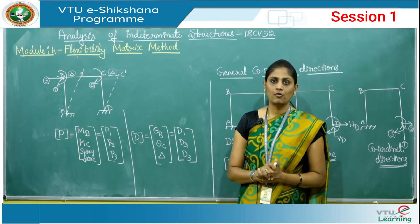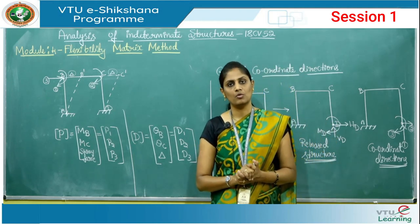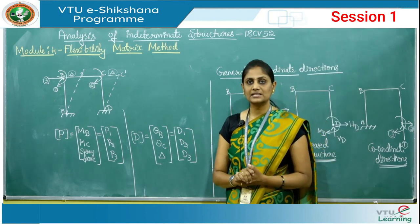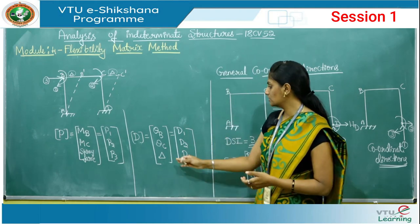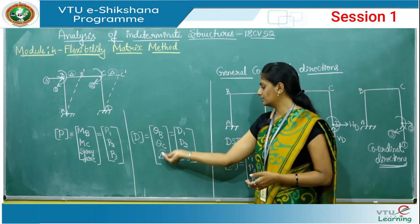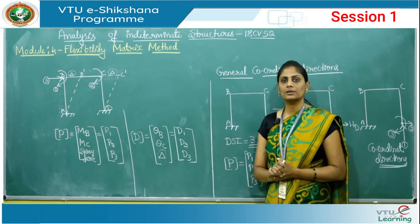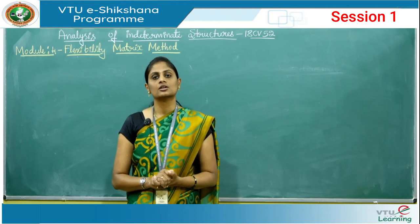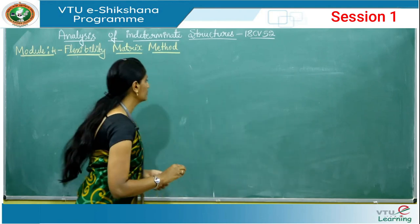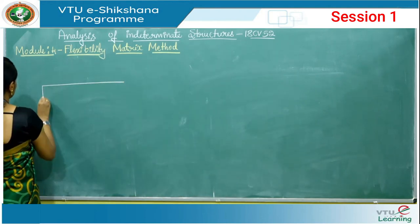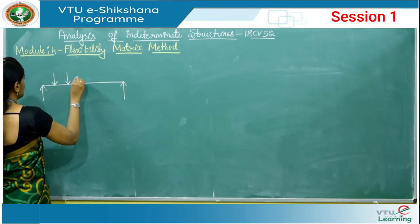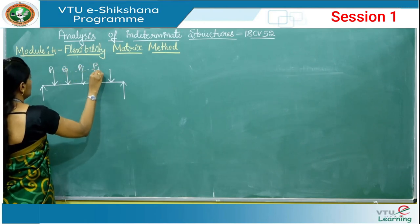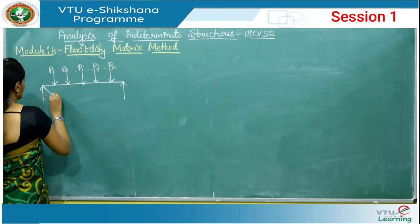In matrix method of analysis, forces generally include both forces and moments, and displacement includes deflections as well as rotations — meaning the D vector is a combination of delta and theta. Now consider a force system with coordinate directions to formulate the flexibility matrix equation. Loads P1, P2, Pi, Pj, Pn are applied at different positions along a beam A-B, causing deflections D1, D2, Di, Dj, Dn at corresponding coordinates 1, 2, i, j, n.